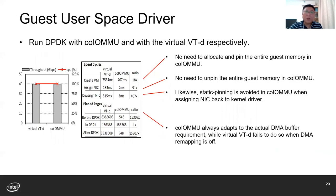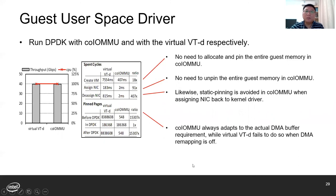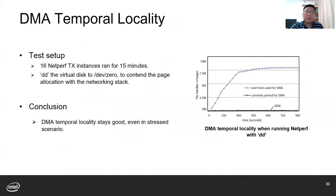For guest user space driver: DMA remapping needs to be enabled when the guest assigns a device to its user space driver, and later disabled when assigning it back to the kernel driver. Without DMA tracking, this means switching between static pinning and fine-grained pinning. We ran DPDK with CoLMMU and with virtual VT-d respectively. CoLMMU can dramatically reduce the latency in different stages compared with virtual VT-d, because CoLMMU always uses fine-grained pinning. We also found that DMA temporal locality stays good even in stressed scenarios, which is important for high-performance I/O processing.